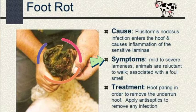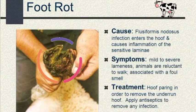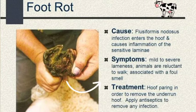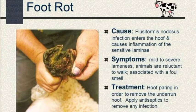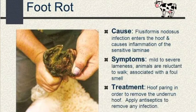Symptoms of foot rot include mild to severe lameness. Animals are reluctant to walk. It is associated with a foul smell, which, as shown in the diagram, is due to the infection.